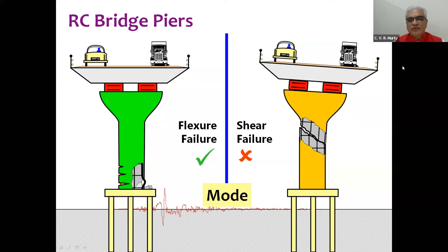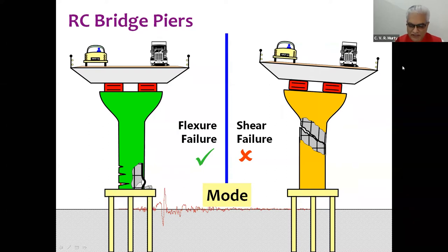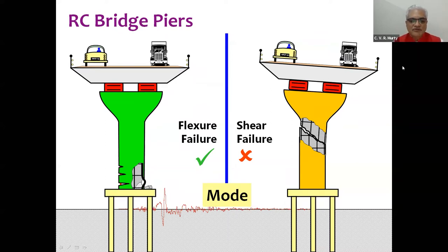That bending moment and shear force demand will lead to either a flexure failure or a shear failure in the two extreme cases, depending on a large number of factors. We need to understand when we will have the left-side situation — the flexural failure — and when we will have the right-side situation, which is a shear failure.